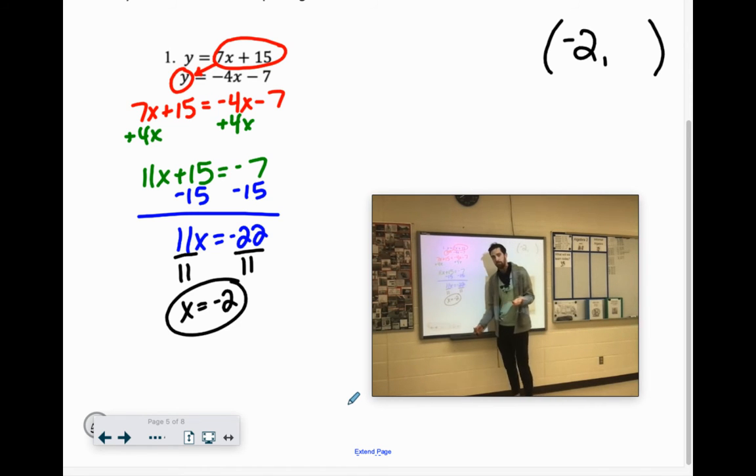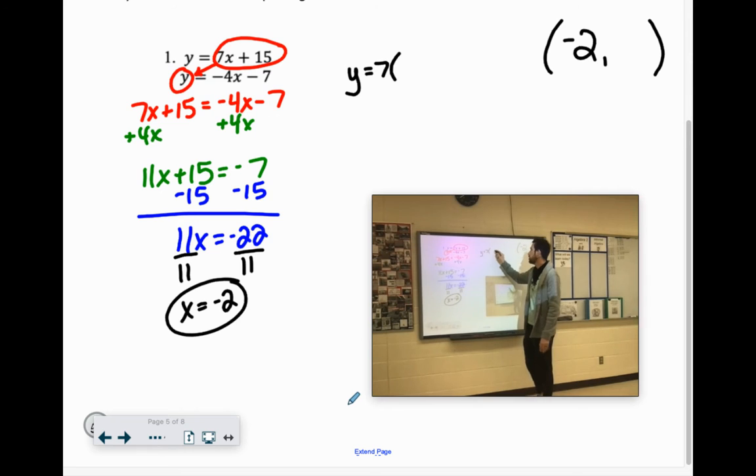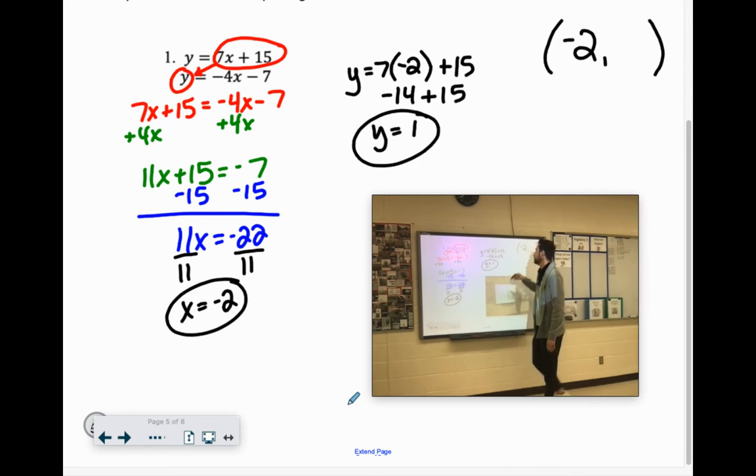I always say just go with whichever one looks easier. To me, probably the first one looks easier. y equals 7x. We know x is negative 2 plus 15. 7 times negative 2 is negative 14 plus 15 is 1. So that would be our y coordinate.